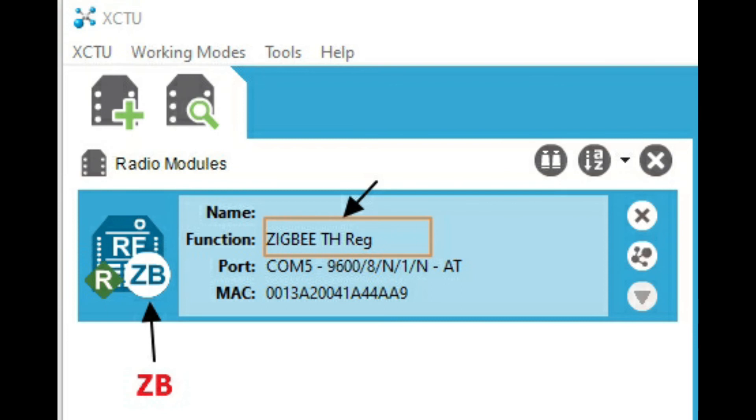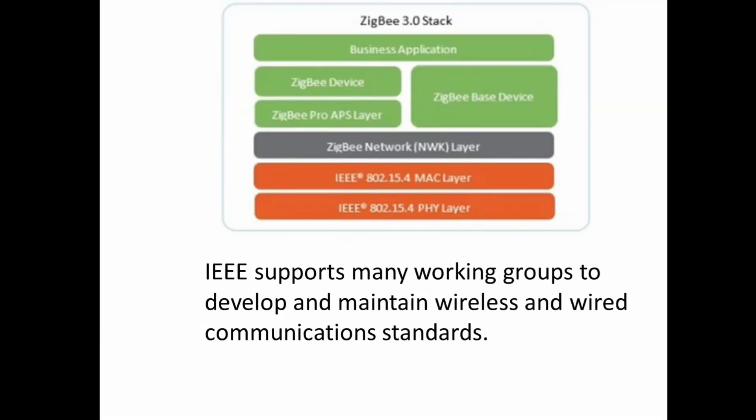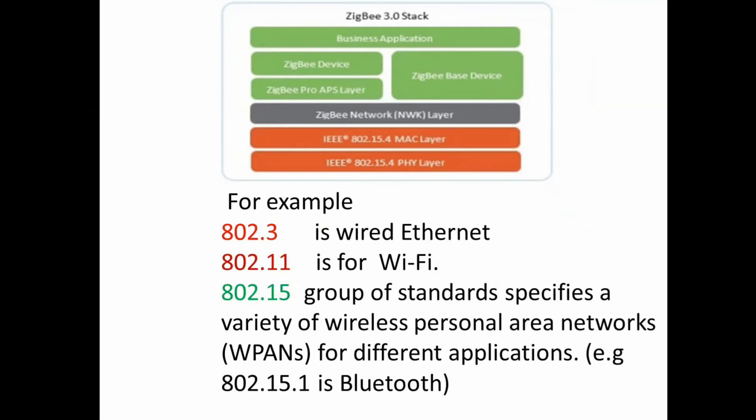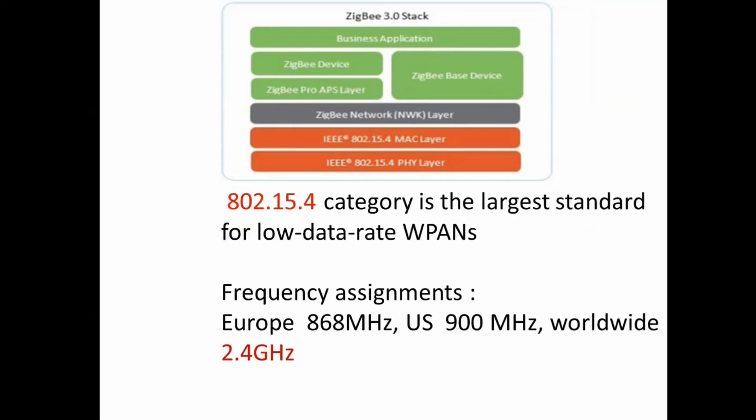Now let us see the IEEE standards. 802.15.4 is the IEEE wireless standard for XBs. 802.3 is for wired network, 802.11 is for Wi-Fi, 802.15 is for personal area networks, and 802.15.1 is for Bluetooth.